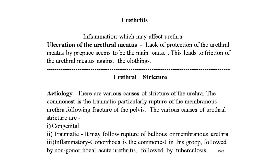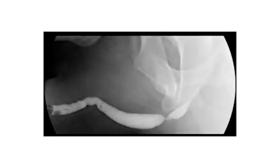Urethral stricture — an important topic. Etiology: nowadays acquired urethral stricture is rare. The commonest cause is traumatic, particularly rupture of the membranous urethra following fracture of the pelvis. Various causes include: congenital; traumatic — following rupture of the bulbous and membranous urethra; inflammatory — gonorrhea is the commonest, followed by non-gonococcal acute urethritis, then tuberculosis; and instrumental. Images on screen show an RGU (retrograde urethrogram) demonstrating stricture urethra with narrowing of the urethral passage, and another RGU showing stricture in the posterior urethra.